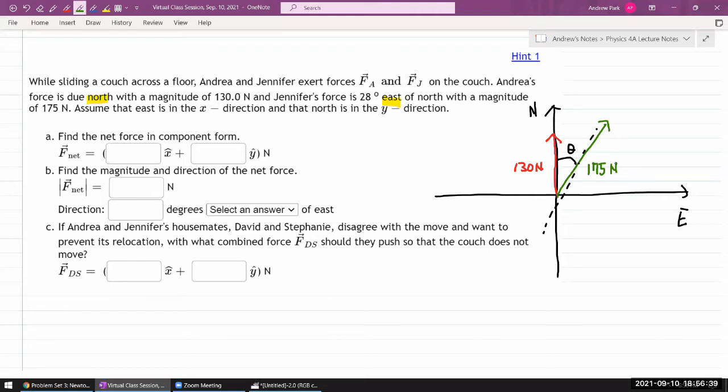Part A says find the net force in component form. This is something that's generally advisable. Whenever you are calculating net or total of any vector quantities, you really want to work with the components. The components are easier to work with algebraically. When you are adding these two vectors in terms of their arrow descriptions, in terms of adding them graphically, head to tail.